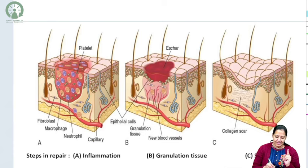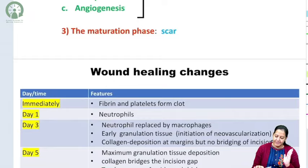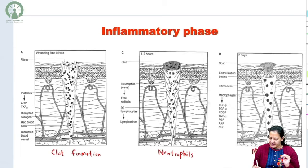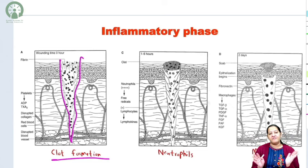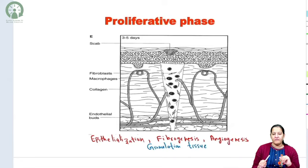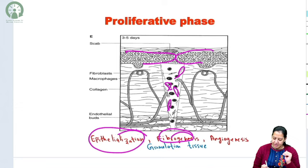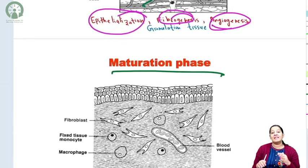To revise: the three phases are shown in the diagram — clot with inflammation, then granulation tissue, then scar. In the inflammatory phase, platelets form the primary clot, then fibrin forms the secondary clot, followed by neutrophils and then macrophages. In the proliferative phase, epithelialization, fibrogenesis with spindle-shaped fibroblasts laying down collagen, and angiogenesis forming new blood vessels from old ones. Lastly, the maturation phase results in scar formation.